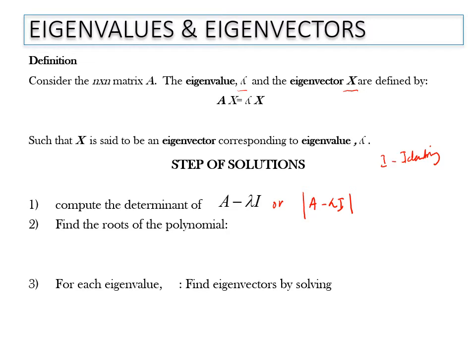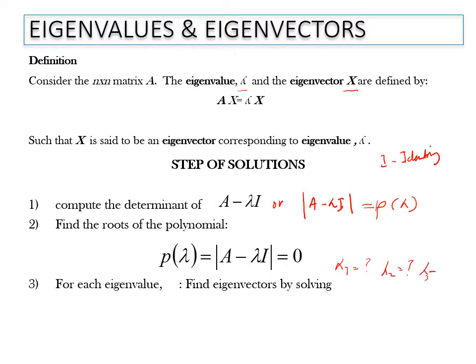We need to find the roots of the polynomial. In the second step, we let the determinant equal to the polynomial of lambda and set it equal to 0. We can then find the roots: lambda 1, lambda 2, lambda 3, and so on. For each lambda, we will find the eigenvectors by solving A minus lambda I times X equals 0.